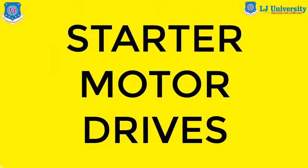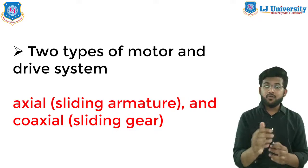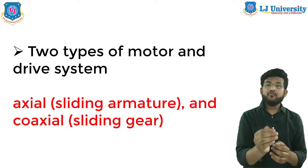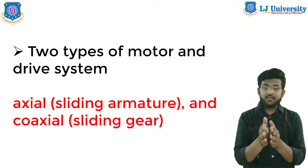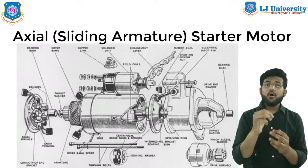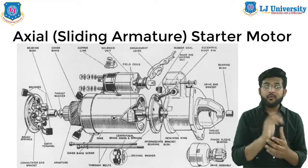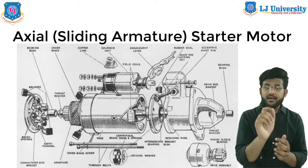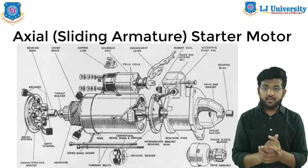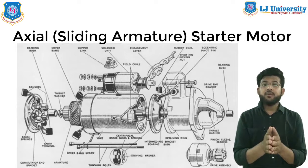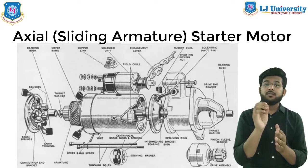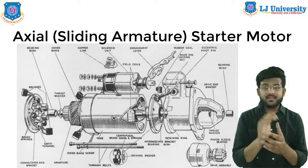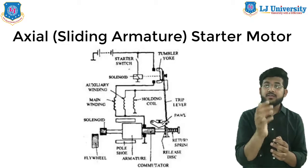Two types of motor and drive systems are used: first is axial and second is coaxial. The axial starter motor is also called the sliding armature type starter motor drive. The main features of this type of starter motor are its compact size and robust construction. For engagement of the pinion to the flywheel ring gear, the complete armature assembly slides through the motor casing.